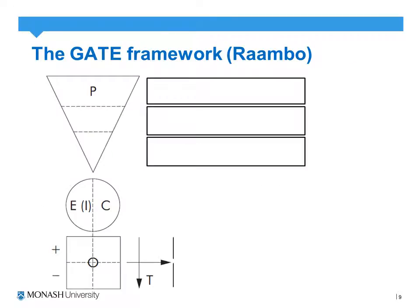The second critical appraisal framework we'll briefly run through is the GATE framework, which is associated with the RAMBO technique. The GATE aspect relates to a specific structure, and RAMBO relates to the critical appraisal aspect. The whole GATE and RAMBO framework revolves around the PICO — patient, intervention or exposure, comparison, and outcome.